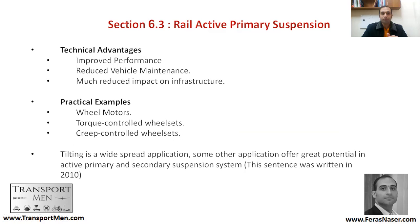The technical advantages of an active primary suspension system include improved performance, reduced vehicle maintenance, and much reduced impact on infrastructure. Practical examples include wheel motors, torque-controlled wheelsets, and creep-controlled wheelsets. Tilting is also included — it is a widespread application that we will discuss further.